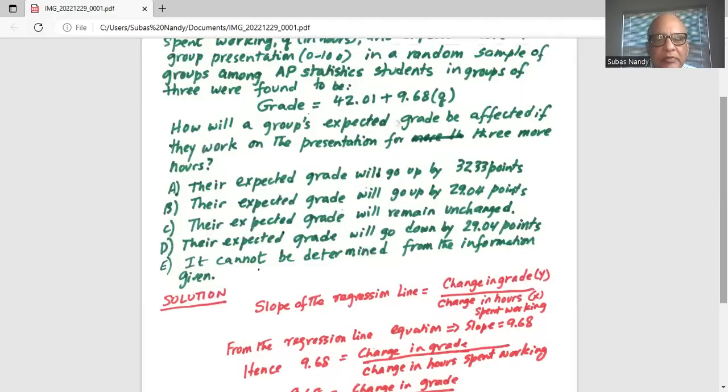So amount of hours. The slope of the regression line is change in grade or change in Y divided by change in hours X spent working.